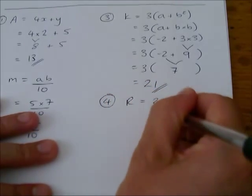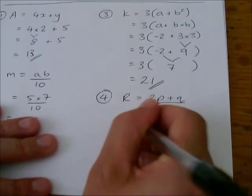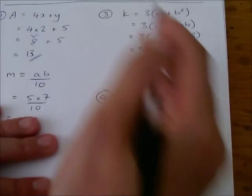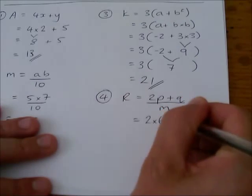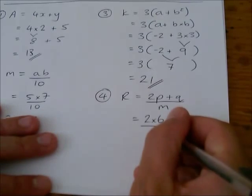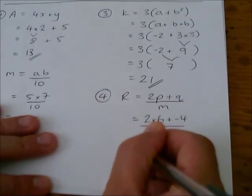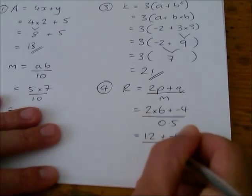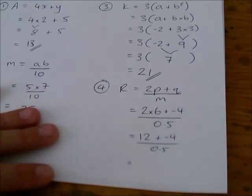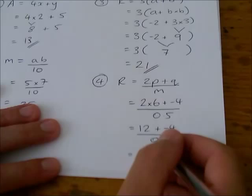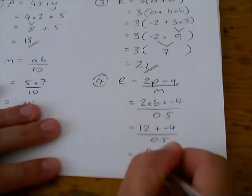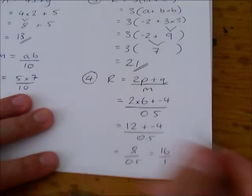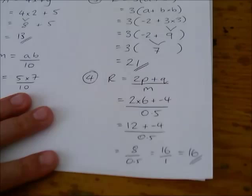So, I am going to be replacing that p with a 6. So, it is 2 times 6. Replace that q with a minus 4. And replace that m with a 0.5. That's going to end up with 12 plus negative 4 over 0.5. 12 plus negative 4 is 8. And 8 divided by 0.5 is the same as 16 over 1. I just doubled the numbers in the fraction there to get an equivalent fraction, which is just 16.